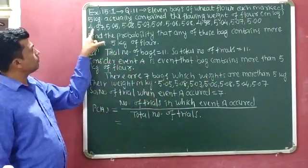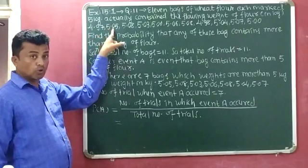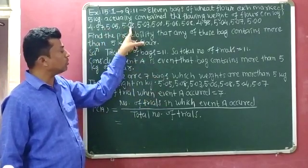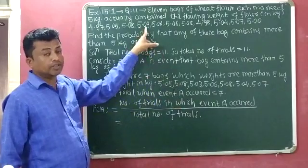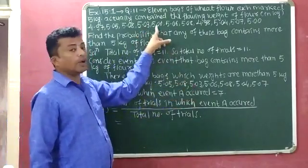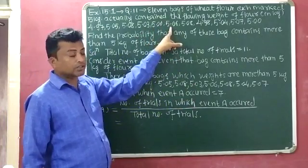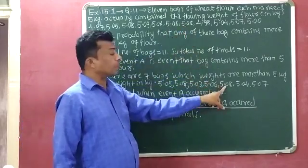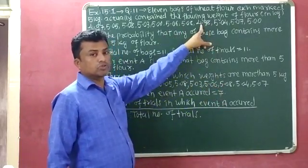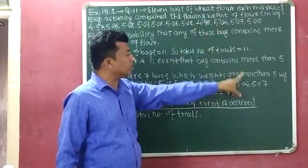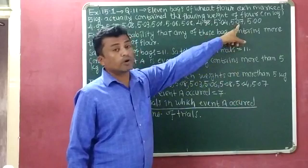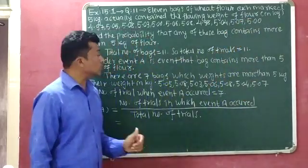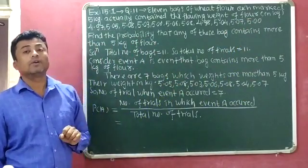Checking each weight: 4.97 — less than 5, no. 5.05 — yes, more than 5. 5.08 — yes, more than 5. 5.03 — yes, more than 5. 5.0 — no, not more than 5. 5.06 — yes, more than 5. 5.08 — yes, more than 5. 4.98 — no, not more than 5. 5.04 — yes, more than 5. 5.07 — yes, more than 5. 5.0 — not more than 5.